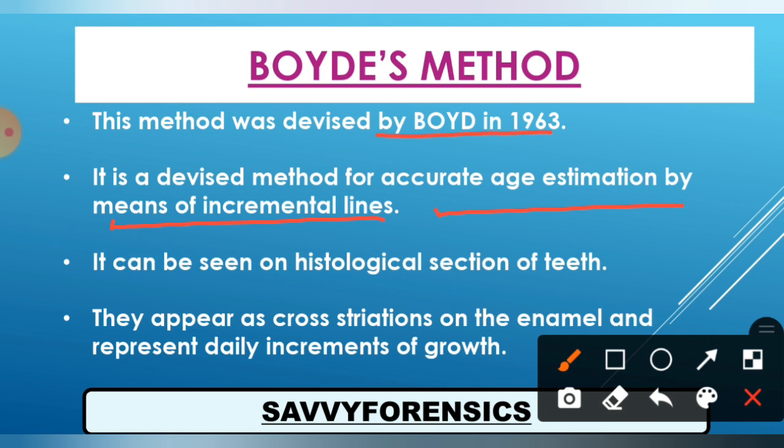Basically, Boyd's Method is used to determine the age of newborns, babies, and infants — all small children. For all such infants and young children, Boyd's Method is used. In this method, the incremental lines present on the dentine and enamel form the basis for age determination.